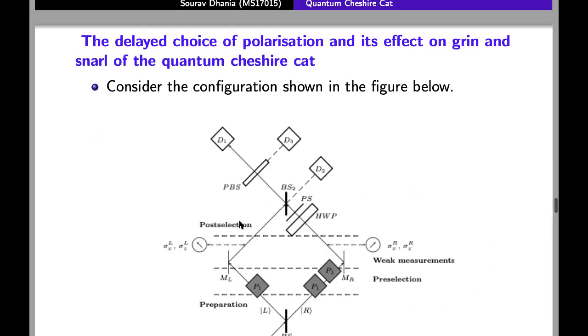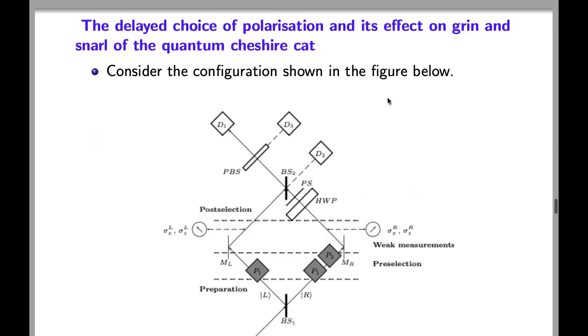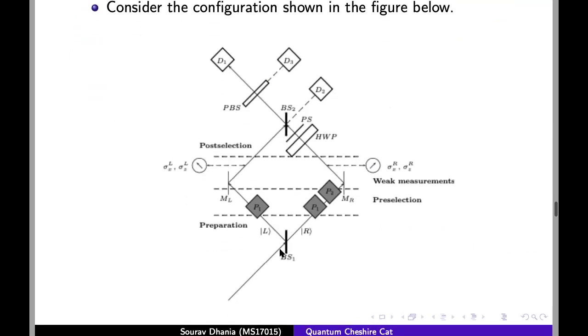Delayed choice of polarization and its effect on grin and snarl of quantum Cheshire cat. Now consider the configuration shown below. We have two beam splitters and here we have phase shifters p1 and p2 which will help in preparation of initial state. And here we have the output and this combination of half-wave plate and another phase shifter and beam splitter and another partial beam splitter. This will help in the detection of the final state.